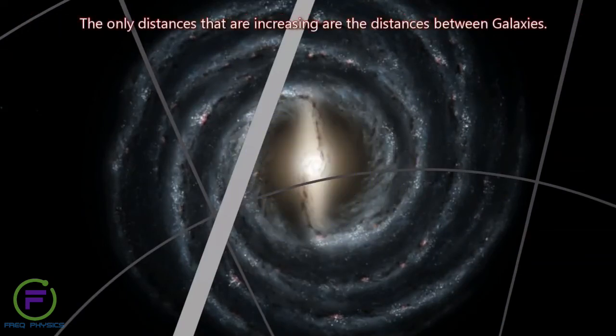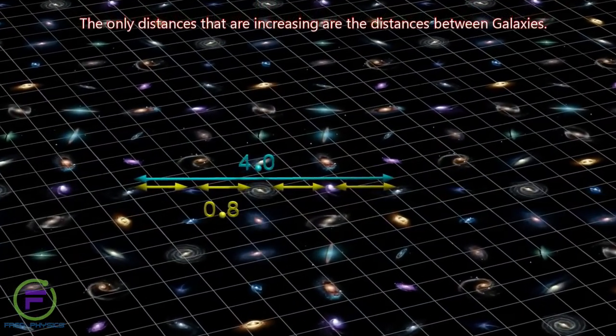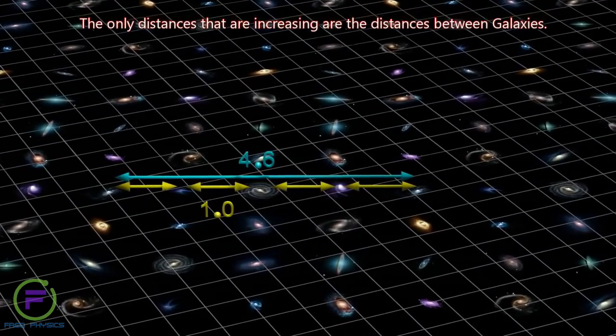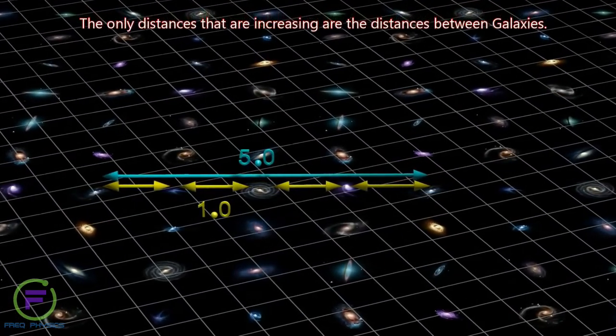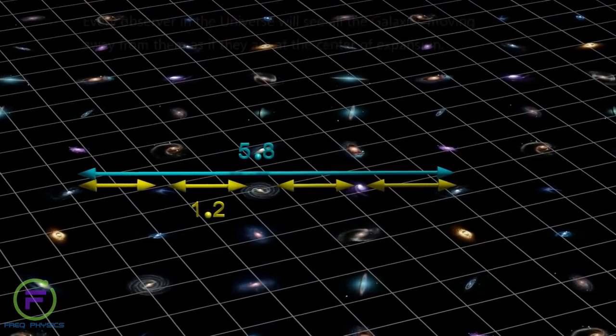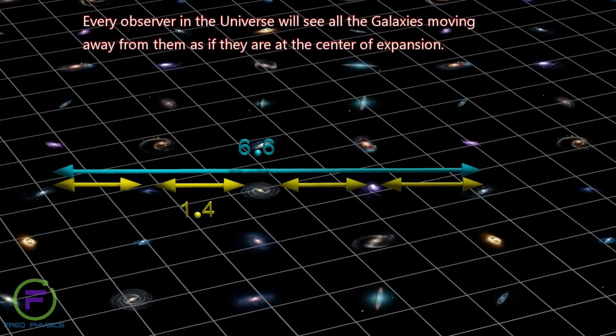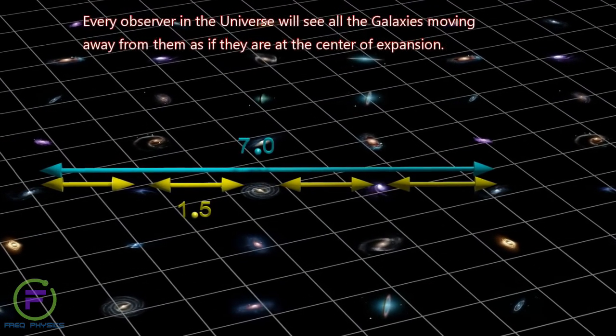The only distances that are increasing are the distances between galaxies. Every observer in the universe will see all the galaxies moving away from them as if they are at the center of expansion.